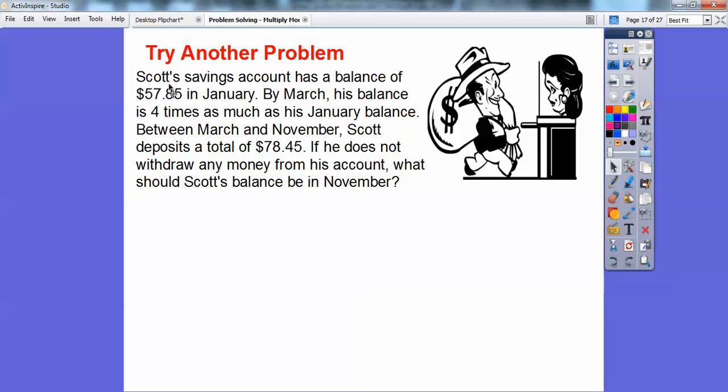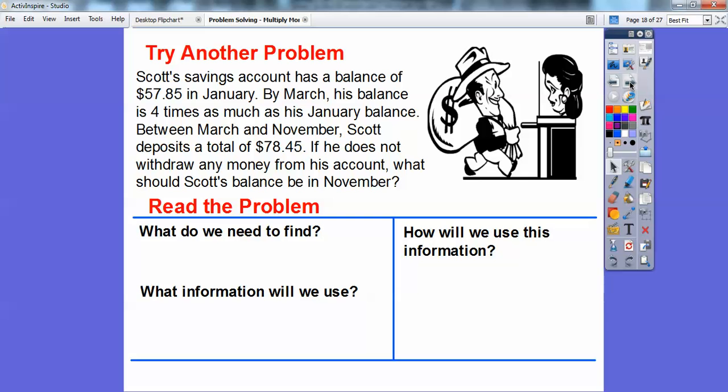Let's break it down one sentence at a time. So let's do the $57.85 for January. We'll draw a diagram. What do we need to find? We need to find Scott's balance in November, it looks like. It's usually the last question. What do we need to find? We should find Scott's balance in November.